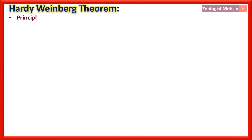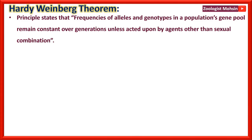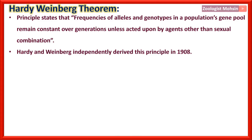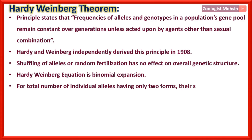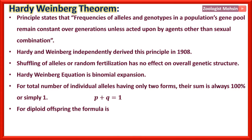Hardy-Weinberg theorem: The principle states that frequencies of alleles and genotypes in a population's gene pool remain constant over generations unless acted upon by agents other than sexual recombination. Hardy and Weinberg independently derived this principle in 1908. Random shuffling of alleles or random fertilization has no effect on the overall genetic structure of a population following Hardy-Weinberg. The Hardy-Weinberg equation is a binomial expansion: p + q = 1, where p and q are the frequencies of two alleles. For diploid offspring, the formula is p² + 2pq + q² = 1.